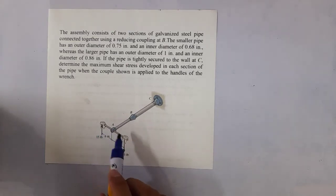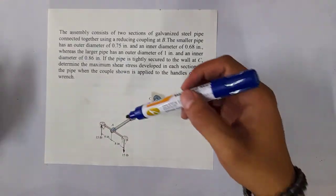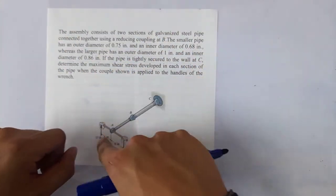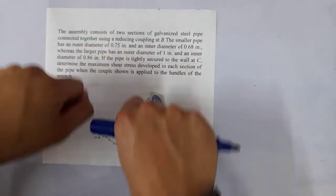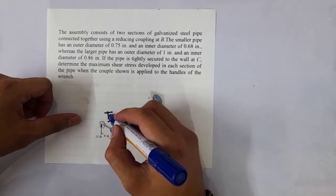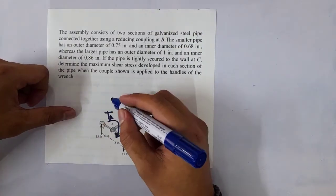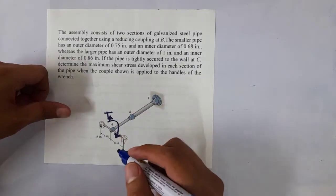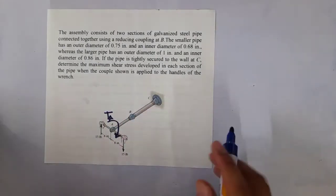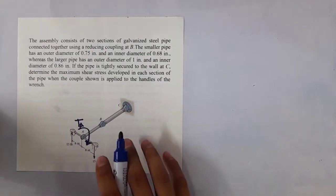We need to determine the maximum shear stress developed in each section of the pipe when the couple shown is applied at the handles of the wrench. Notice that the force applied here causes a torque: this one is pushing in one direction, this one is pulling in the other direction, so it creates a couple — a moment in the clockwise direction. How do we solve for this?